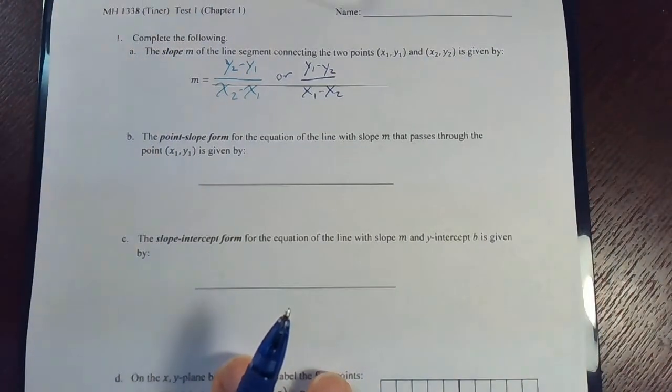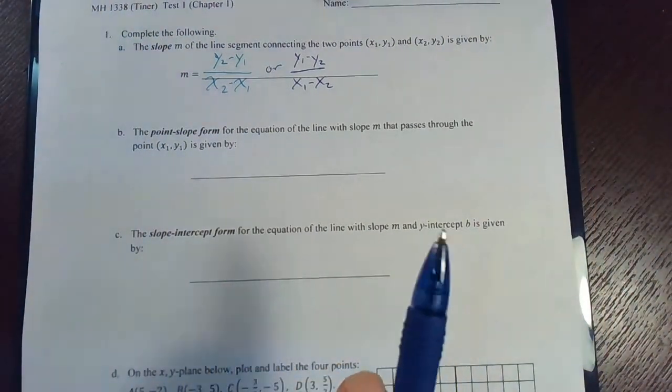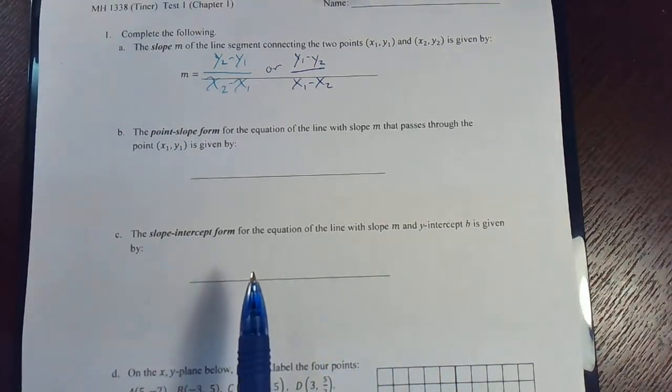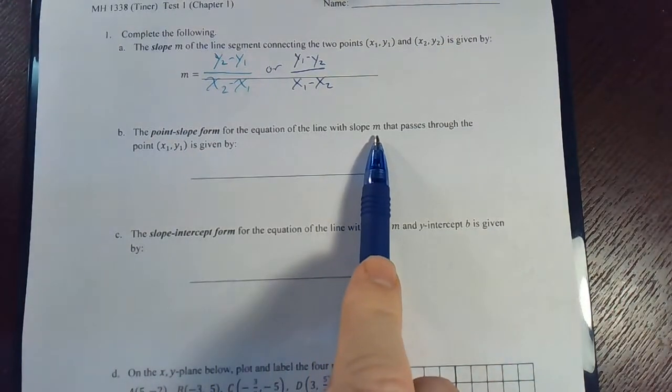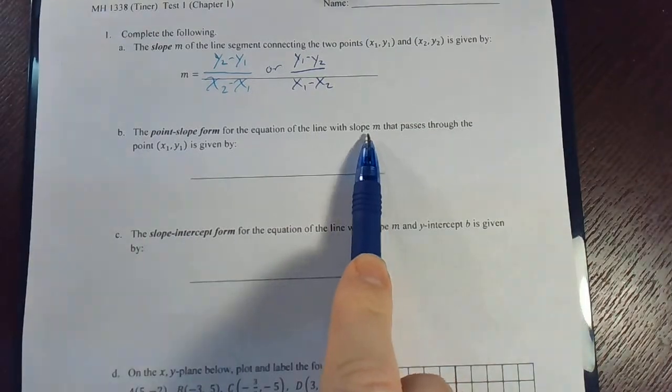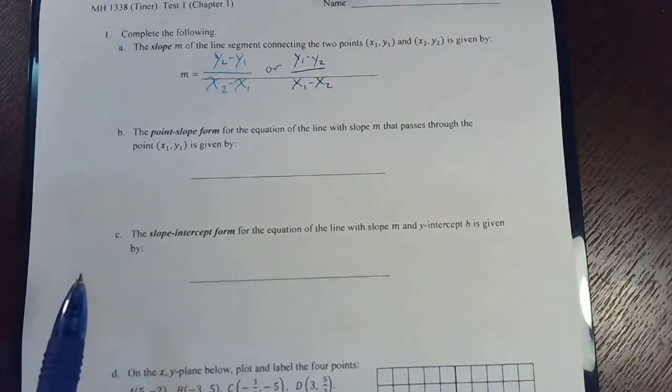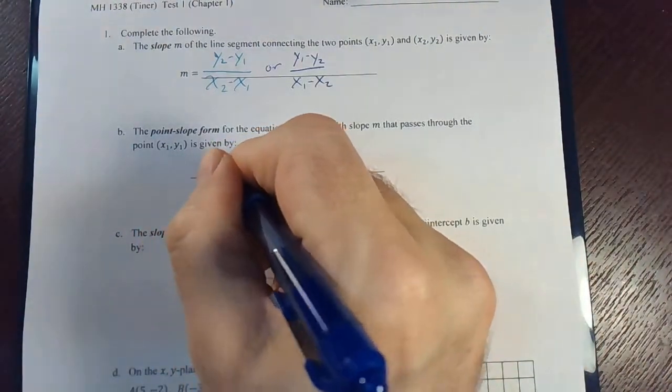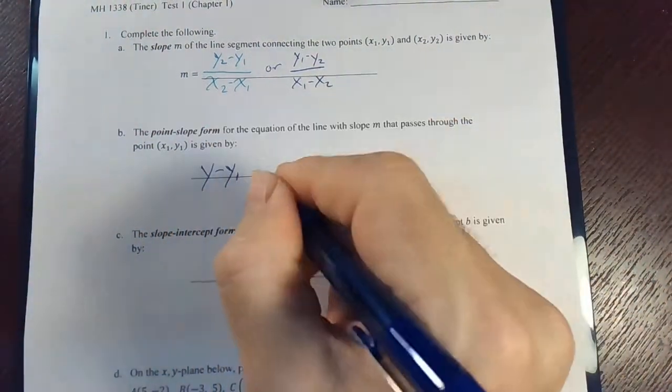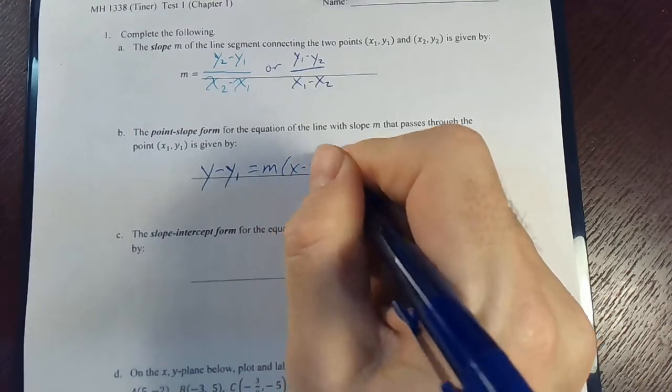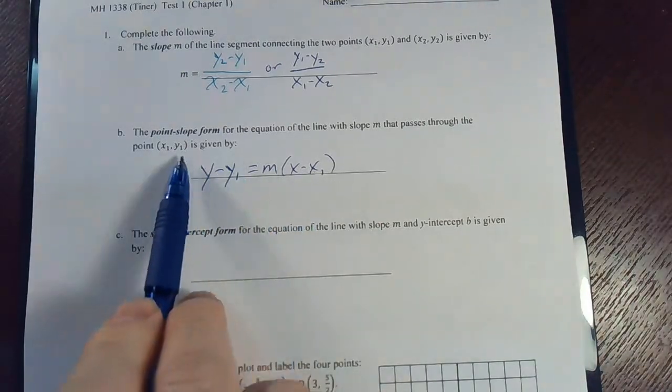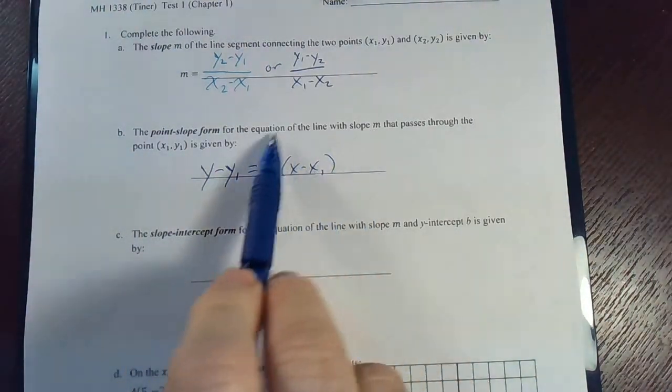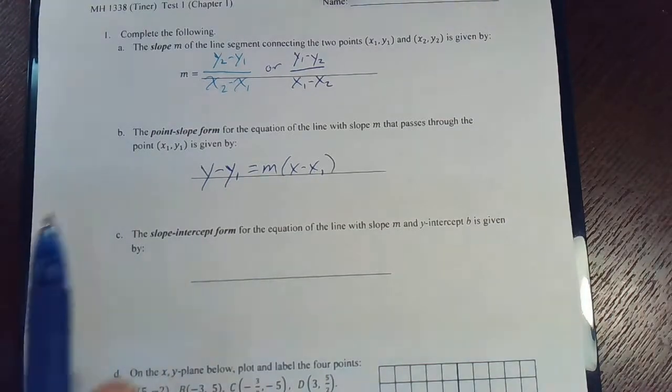The point-slope form for the equation of the line. If you're given the slope m and one single point that it passes through, this one is simply y minus y1 equals m times (x minus x1). So all you have to do is plug in the x1 here, plug in the y1 here, and plug in m right there. Point-slope form.